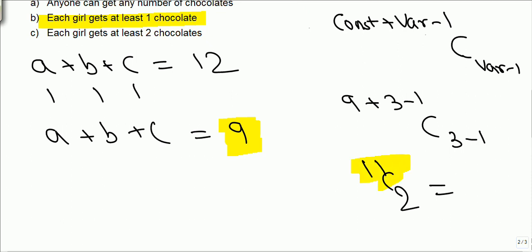So what we'll be getting is 11 C two. You all can solve it. 11 C two. So how many? 11 into 10 by two. 55 different solutions will be there.